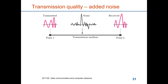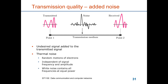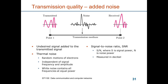Transmission quality is affected by attenuation and distortion, but there is also noise added to the signal. A waveform transmitted from one point has noise generated from outside added to it, so the received signal looks different from what was sent. Noise is an undesired signal added to the transmitted signal. The most common form is thermal noise, due to the random motion of electrons in the medium. We call the noise white if it contains all frequencies with equal power. The signal-to-noise ratio, SNR, is the ratio between the signal power sent into the medium and the noise power added in the medium, and is often measured in decibels.